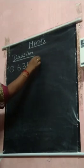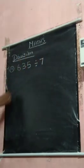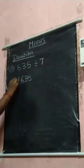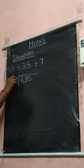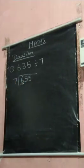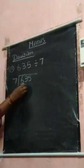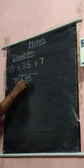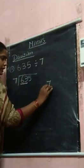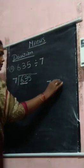Divide by 7, 635 divide by 7. First you take the first digit, 6 is smaller than 7 or bigger than 7? Smaller than 7. So that you take 2 digits. If you are taking 2 digits means, you start the multiplication from 5.